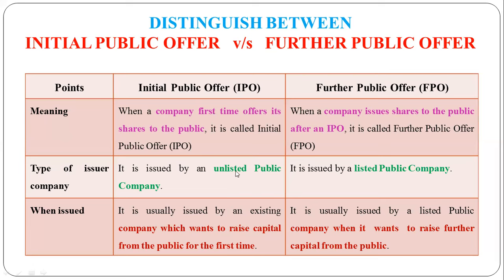An unlisted public company means that this company's shares are not listed on a stock exchange. For the company's shares to be listed, they must be registered on a stock exchange. A listed public company is one whose shares are already registered on the stock exchange. Listing means registering — if a company wants to sell its shares, it must register them on a stock exchange.